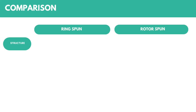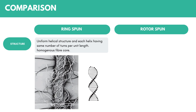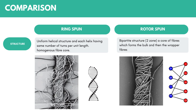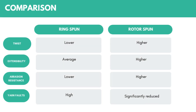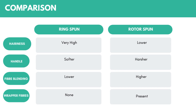Regarding structure, ring spun yarn has a uniform helical structure with each helix having a set number of turns per unit length and a homogeneous fibre core. Rotor spun yarn has a bi-partite structure with two zones: a core which forms the bulk, and the wrapper fibres on the outside. On twist: ring spun yarn has lower twist, rotor spun has higher twist. On extensibility: ring spun has average extensibility, rotor spun has higher extensibility. Ring spun yarn has lower abrasion resistance, while rotor spun has higher abrasion resistance. Yarn faults are higher in ring spun yarn and significantly reduced in rotor spun yarn. On hairiness: ring spun yarn is very hairy due to protruding fibres, whereas rotor spun yarn has low hairiness because the wrapper fibres keep all surface fibres intact to the core.